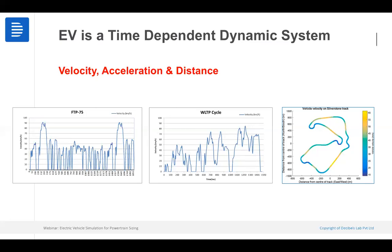Consider different drivers: one person drives 5 kilometers and charges, another 10 kilometers, another 25 kilometers. All of this behavior affects battery life because of how charging is done depending on SOC regions — there are different effects on the battery. This illustrates why modeling is required to implement all these parameters, and why the time-dependent nature of the EV makes simulation necessary.